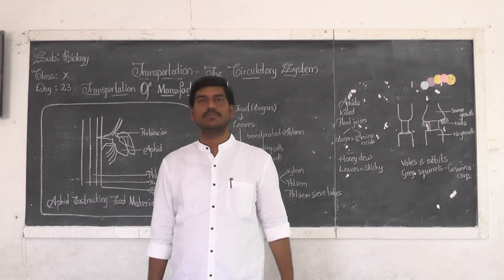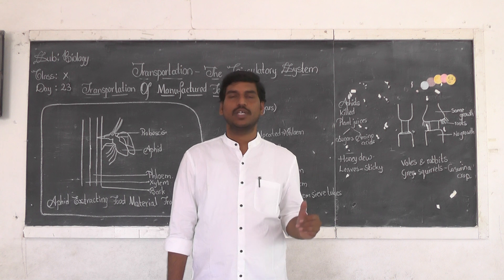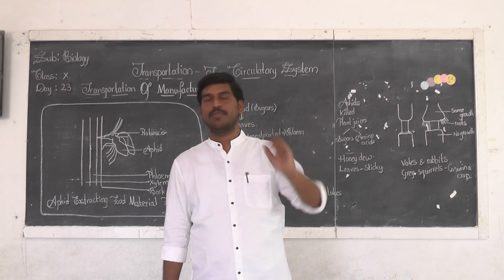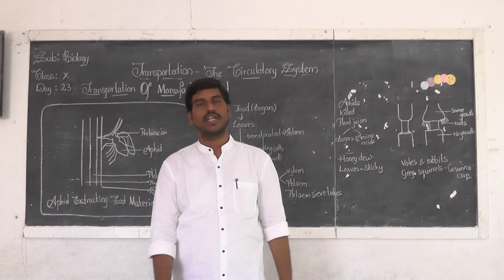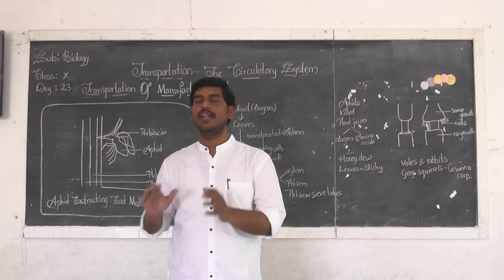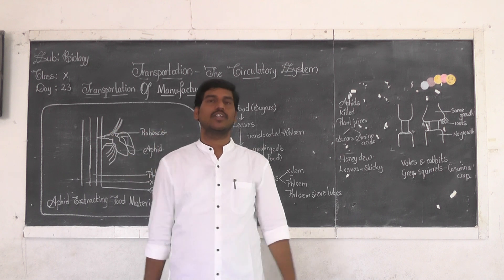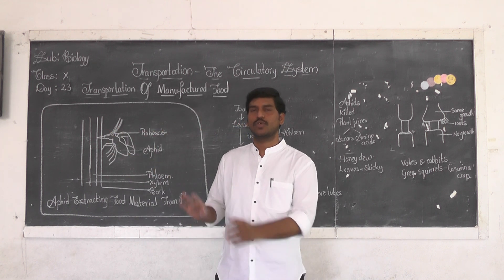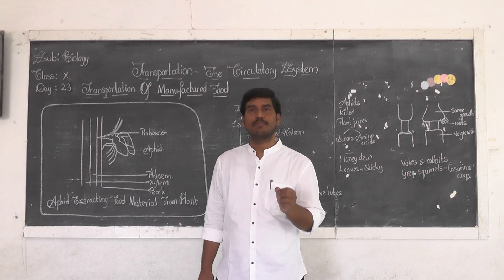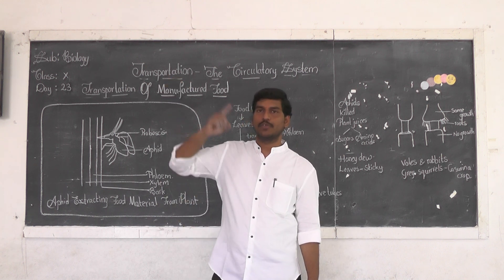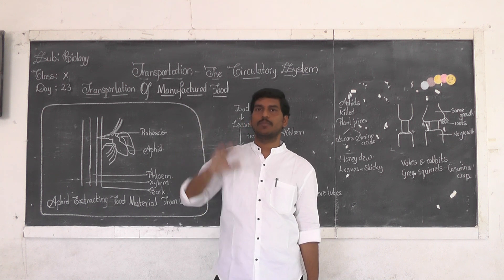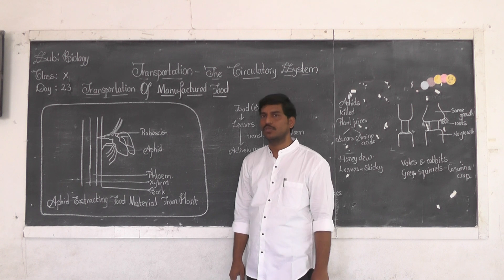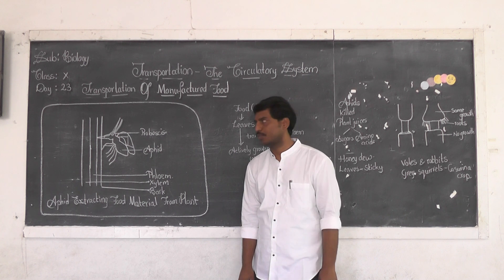In the case of xylem, water is transported from the roots up to the tip of the plant. But in the case of phloem, it is not like that. The food material produced in the top portions of the plant is randomly distributed — that means the transportation of food material is bidirectional. It may be from top to bottom or bottom to top; both ways it is being done. So the best word to use is translocation instead of transportation.